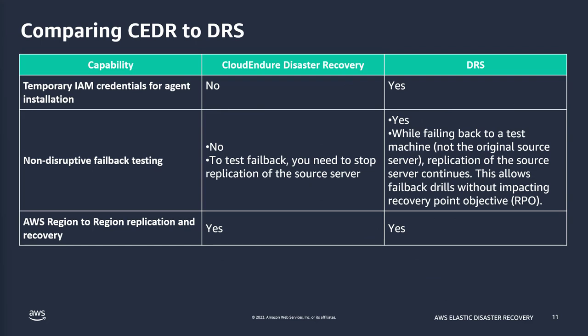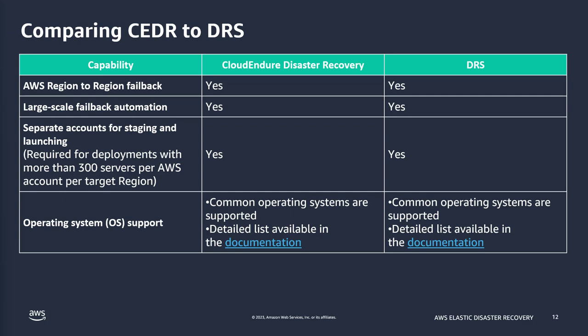Temporary IAM credentials are available through STS — the Security Token Service. Region-to-region replication and recovery are both supported, as they were before. Non-disruptive failback testing is a new capability not available in CloudEndure DR. Within DRS you can test your failback not to the original source machine but to a machine dedicated for that process, such as a dev or test machine. Region failback, large-scale failback automation, and separate accounts for staging and launching are all the same as before.